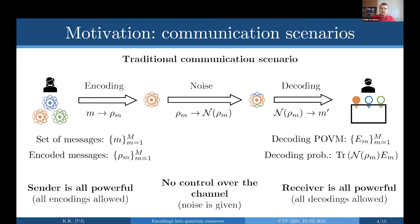In this standard traditional scenario, we can see the sender as all-powerful: there are no constraints on the encodings Alice makes — she can prepare any states rho_m she wants. Similarly, Bob can use any POVM he wants, so there's no restriction on his measurements. The only thing we don't control is the middle — the noisy channel. The whole idea is to find optimal schemes to fight against this noise.